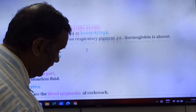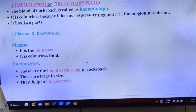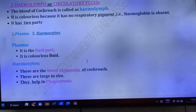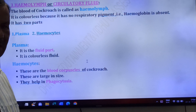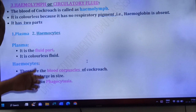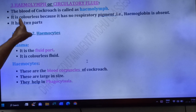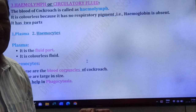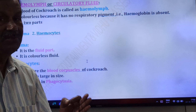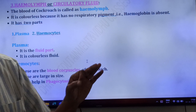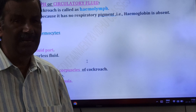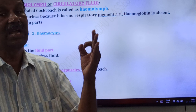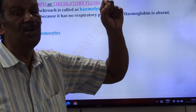Now the last part: hemolymph, also called circulatory fluid. The blood of cockroach is called hemolymph. It is colorless — very important. Our blood is red due to the presence of hemoglobin, but cockroach blood is colorless because it has no respiratory pigment, that is, hemoglobin is absent.